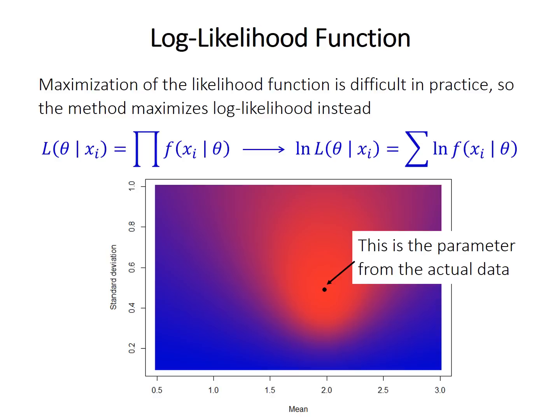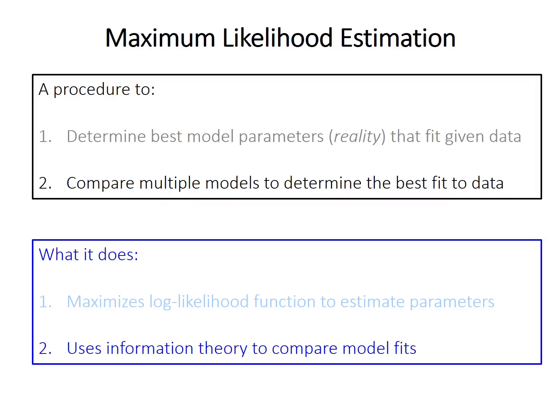So you might be wondering at this point, like, what is the point of all this? Like, you know, if we can just get this value from the data, why do we need to go through this whole process about finding the likelihood function and maximizing it and so forth? Well, the real strength of this method is the ability to compare multiple models to find the one that is most likely of those given the data.